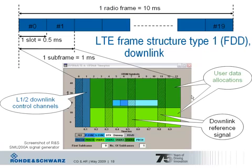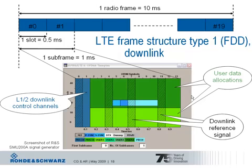This slide shows the LTE frame structure type 1, which is used for FDD — frequency division duplex — operation. The radio frame is defined as 10 milliseconds, the same definition as in wideband CDMA. One radio frame contains 10 subframes, and one subframe contains two slots.